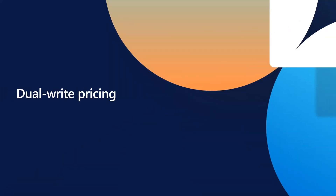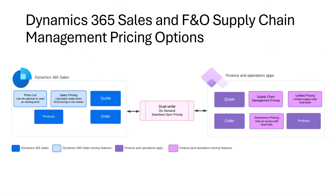Let's spend a few minutes on the dual-write pricing options and the key parameters for configuring pricing rules for the integration. Finance and Operations includes a sophisticated pricing engine that can be integrated with Dynamics 365 Sales out of the box using dual-write. Customers can configure if all price-related calculations should be done in the F&O Supply Chain Management app and then synced to Sales, or whether Sales could do selected price-related calculations on quotations and sales orders. Within Dynamics 365 Sales, products are integrated unidirectionally from F&O and price lists can be optional or used as a starting point until the F&O pricing engine integration is triggered.